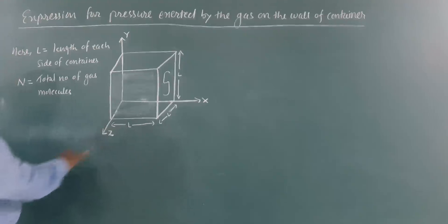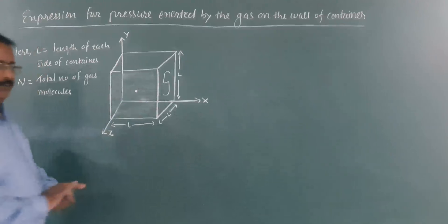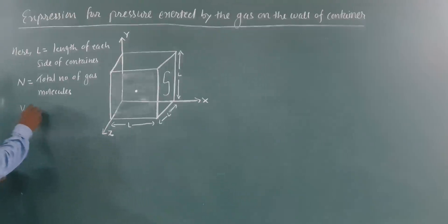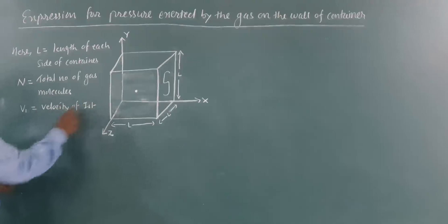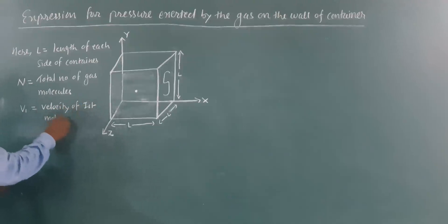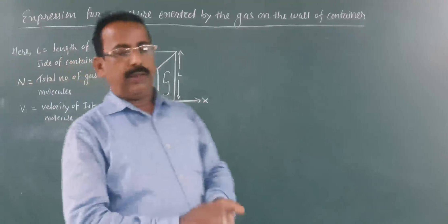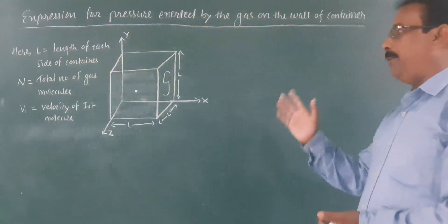To find the pressure exerted by the gas on wall S, take one molecule. Suppose V1 represents the velocity of the first molecule. Take this velocity in three components: X component, Y component, and Z component.